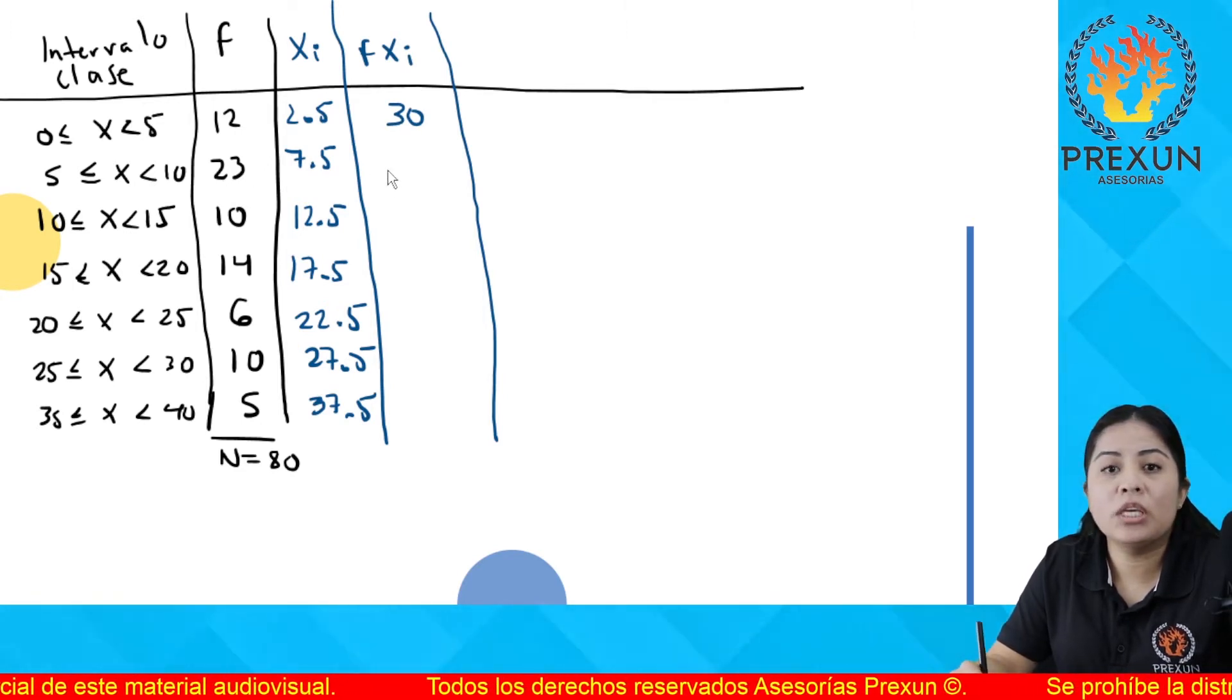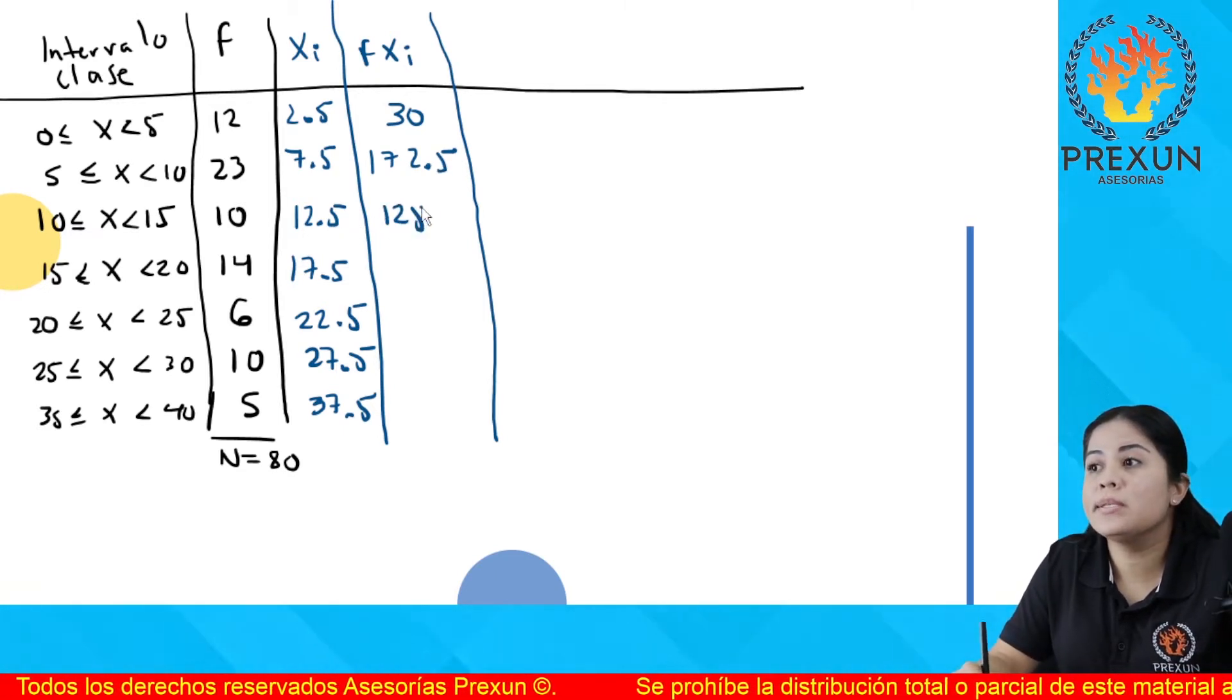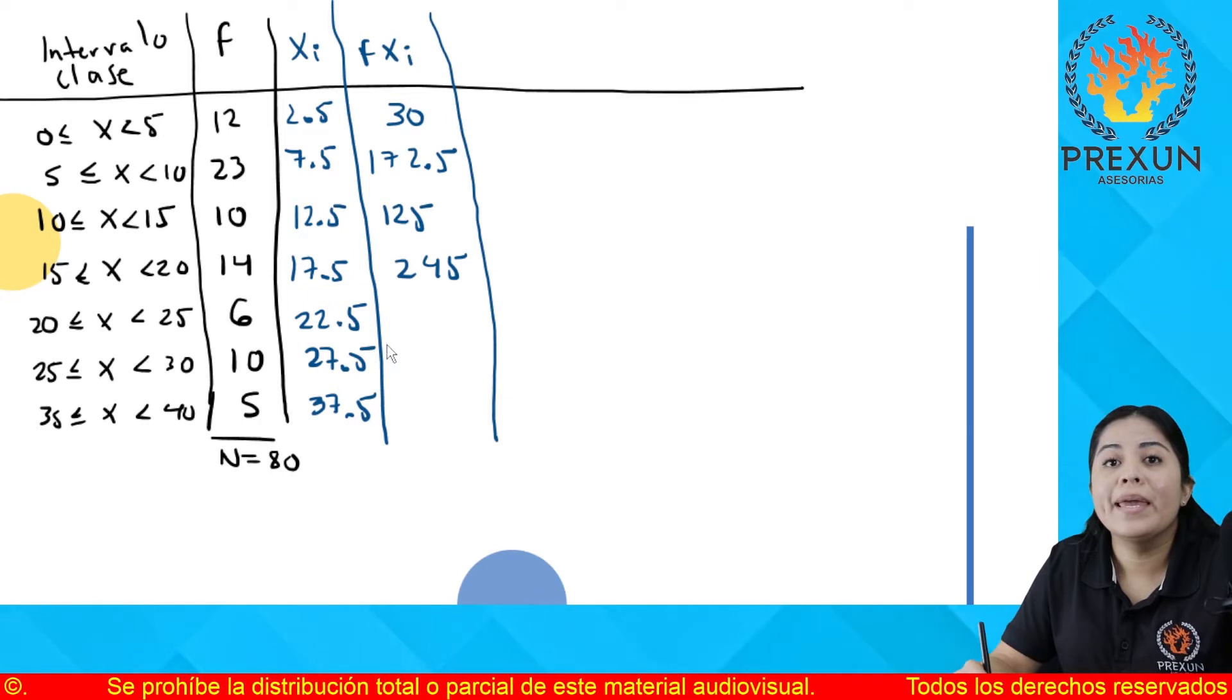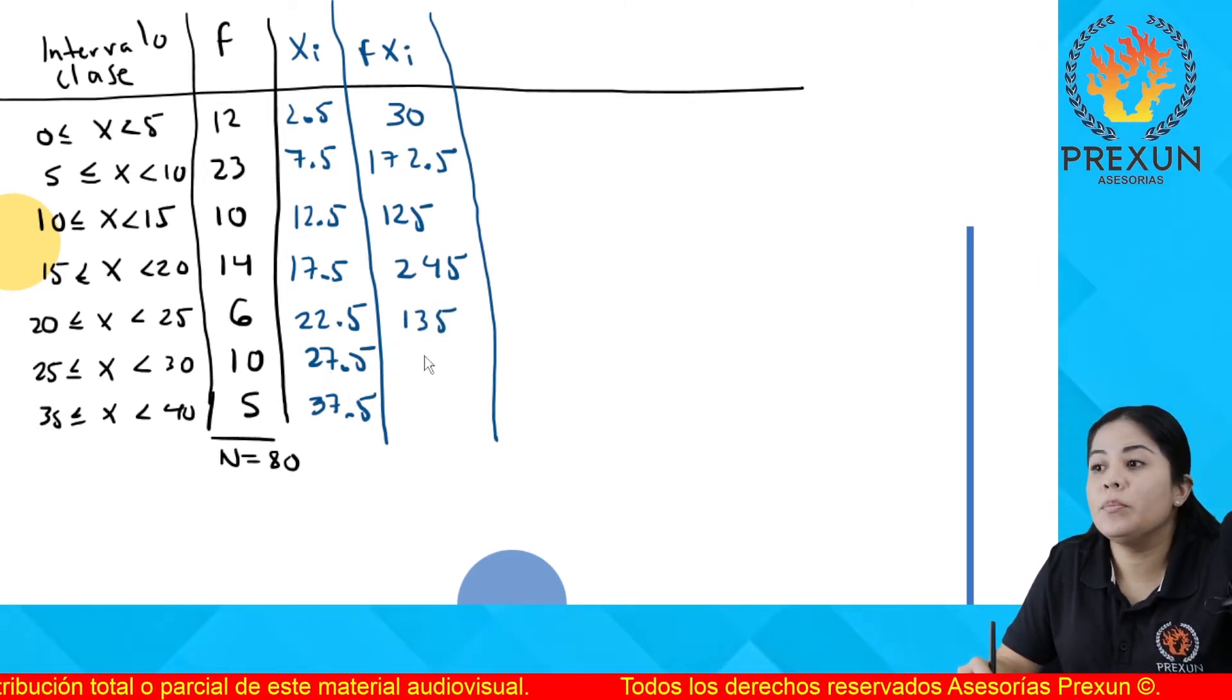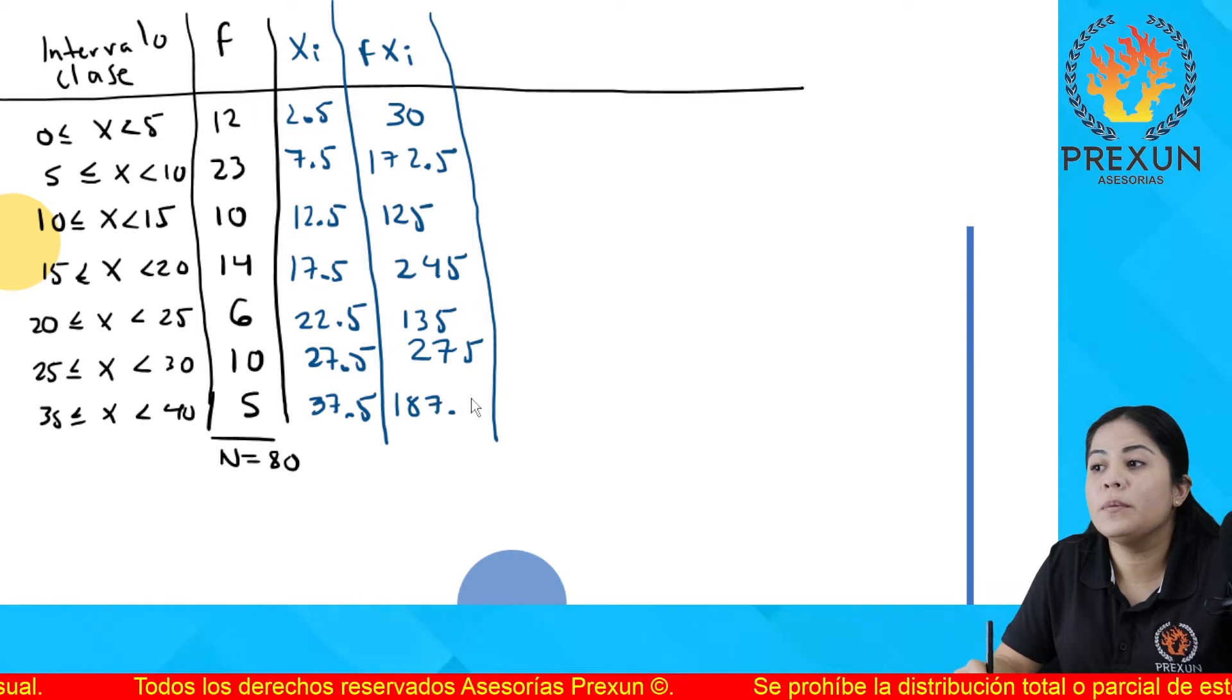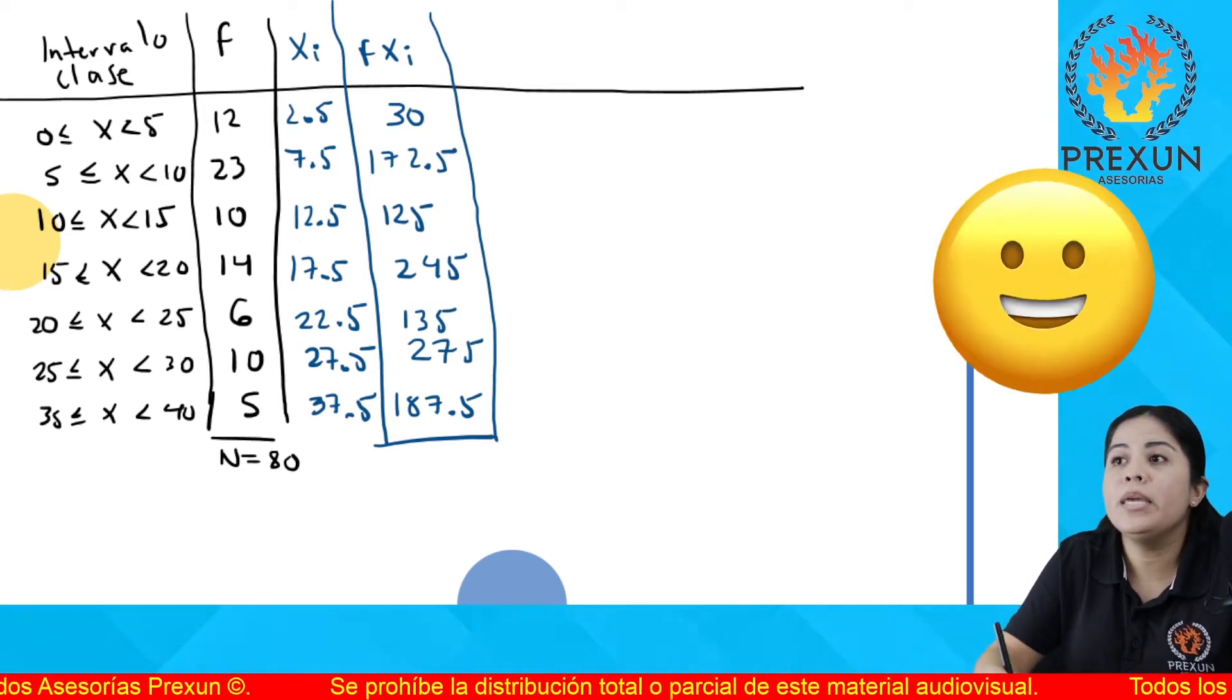El siguiente, 23 por 7.5 es 172.5. 10 por 12.5 es 125. 14 por 17.5 es de 2.45. 6 por 22.5 es de 135. 10 por 27.5 es de 2.75. Y 5 por 37.5 es de 187.5. Sumamos todas estas cantidades obtenidas y me da un valor de 1170.